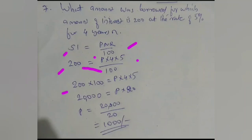200 into 100 is equal to 20,000, which is equal to P into 20. This will become 20.